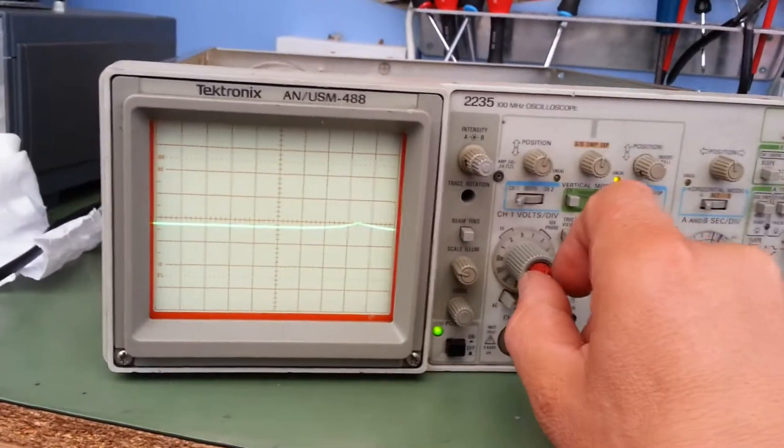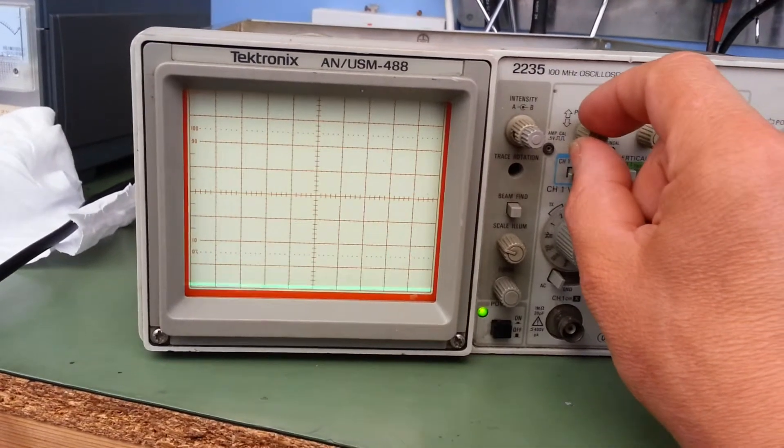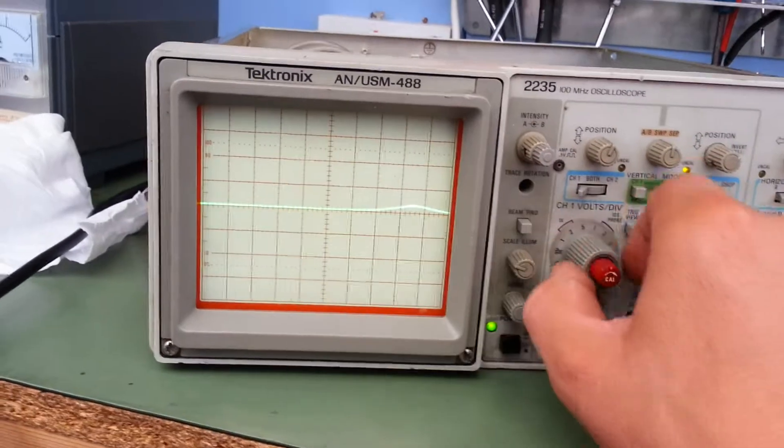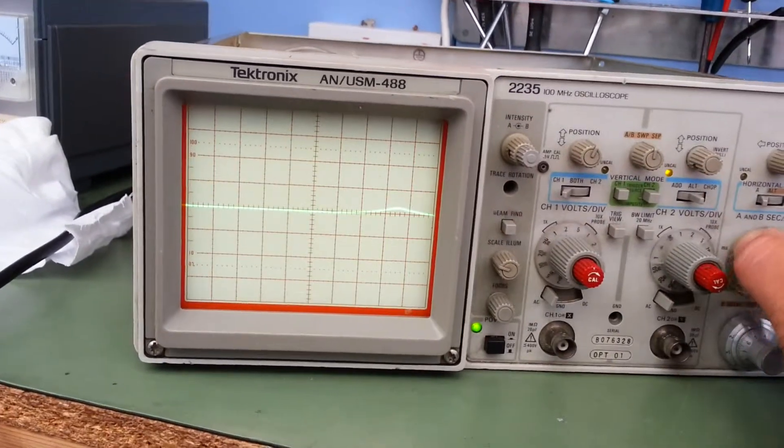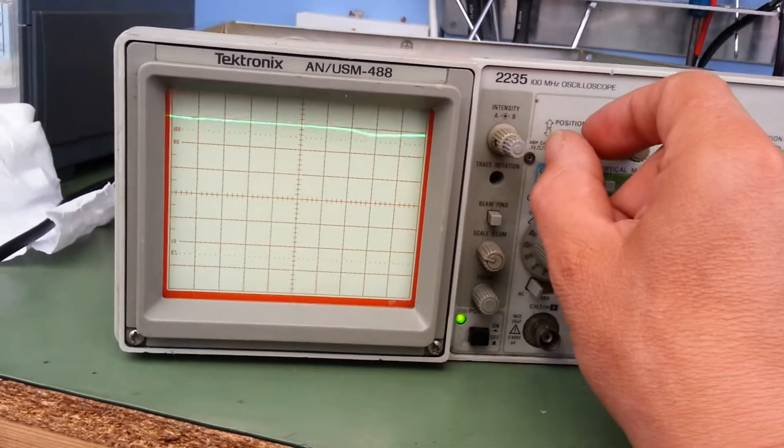But the main problem I've got here is there's a distortion in the trace here. This is irrelevant to what you do to any of the input. But it's something to do with the cathode ray tube I think, or something to do with the drive to the cathode ray tube.